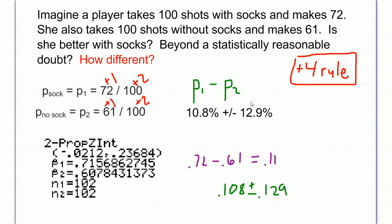But if you want a 95% confidence interval of the error in there, it could be plus or minus 12.9%. It could be so much error that it turns out you actually are better without socks.